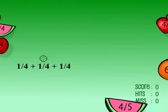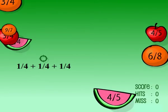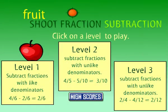When you're ready, move on to level two and try adding three fractions at once. Or try Fruit Shoot Fraction Subtraction. Stick with level one for now. We'll come back to the advanced levels, where you'll add and subtract fractions with different denominators later on in this series.